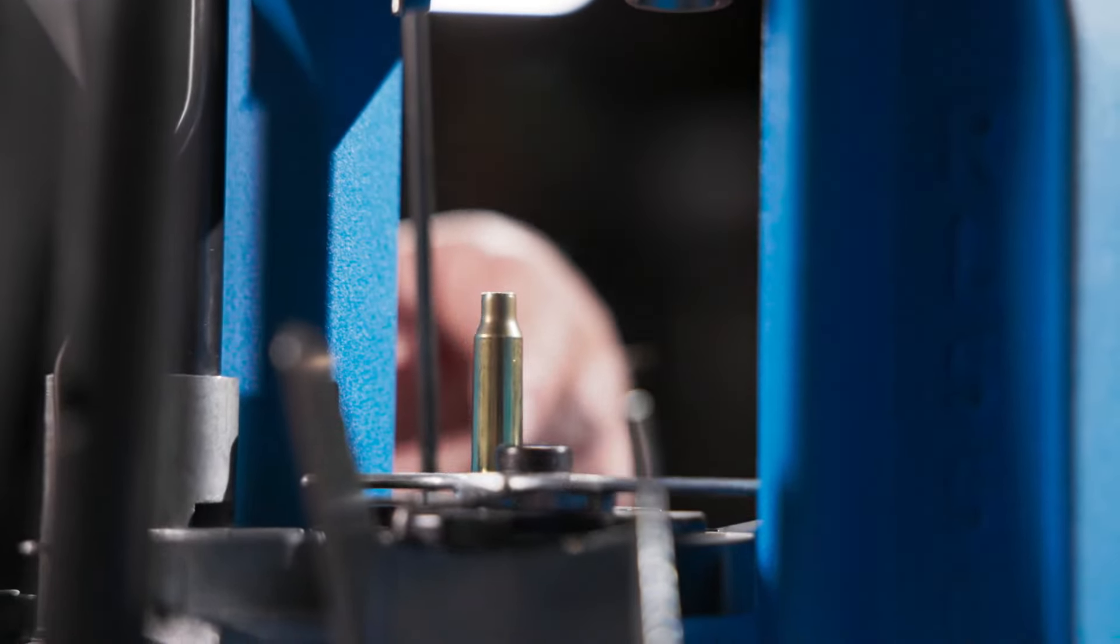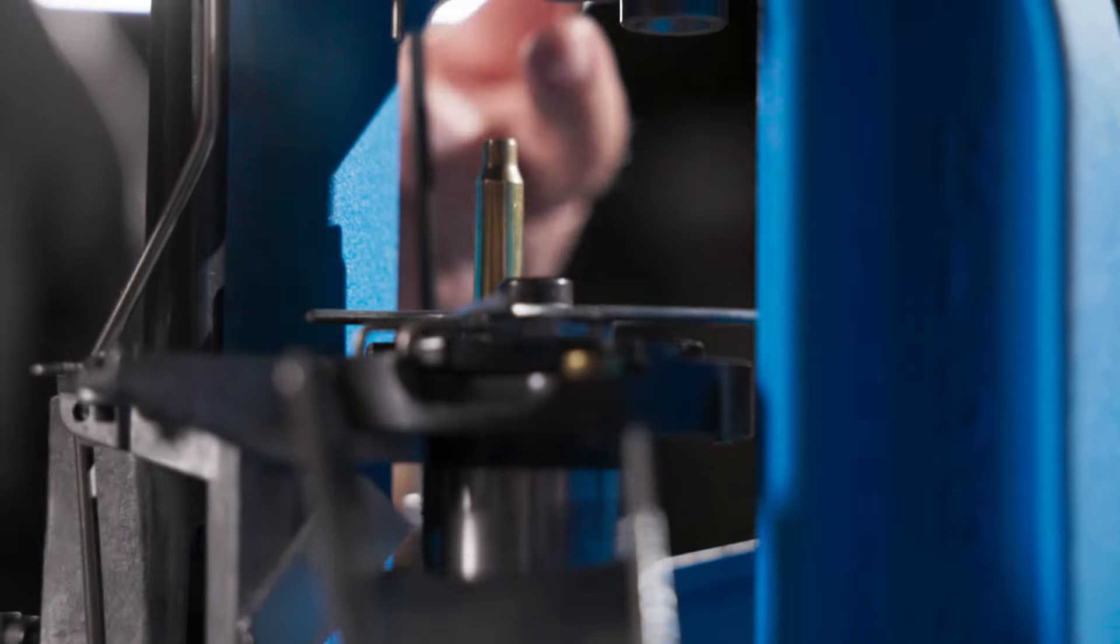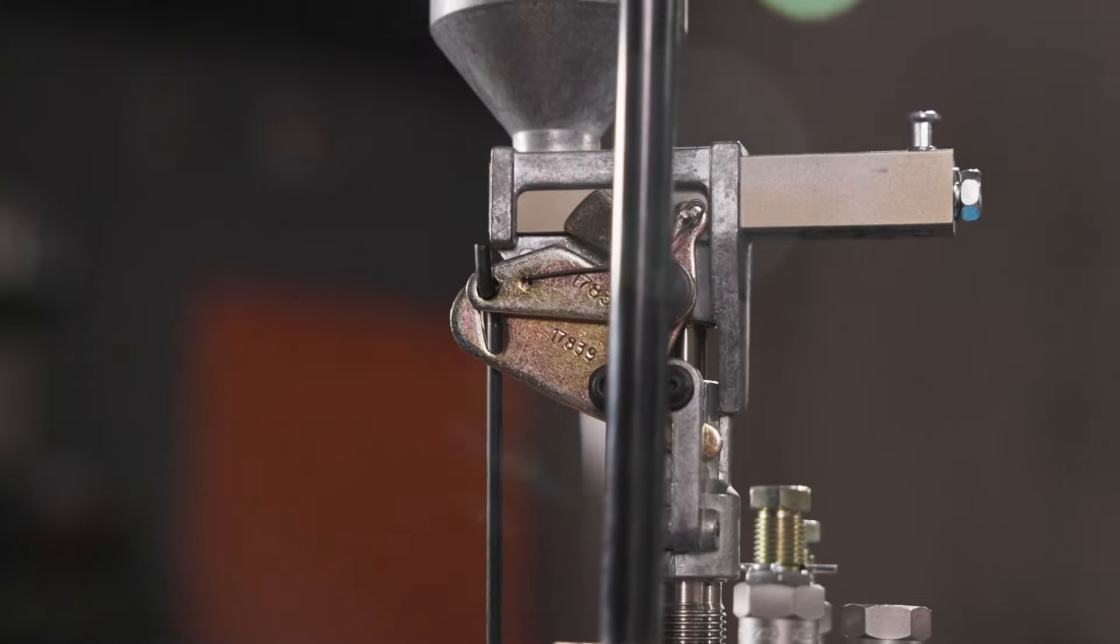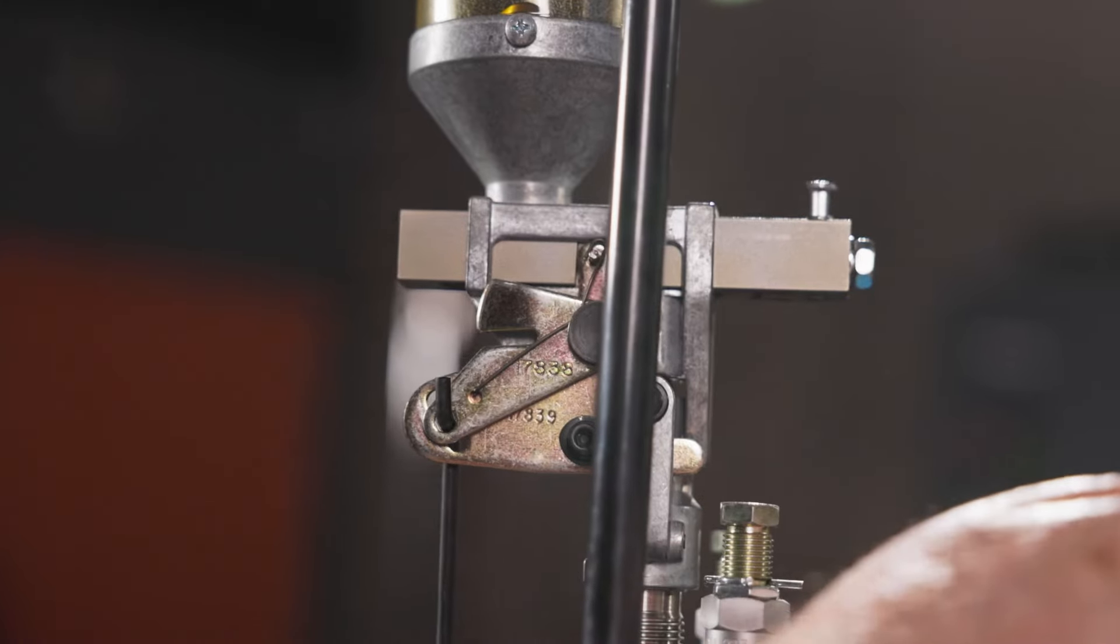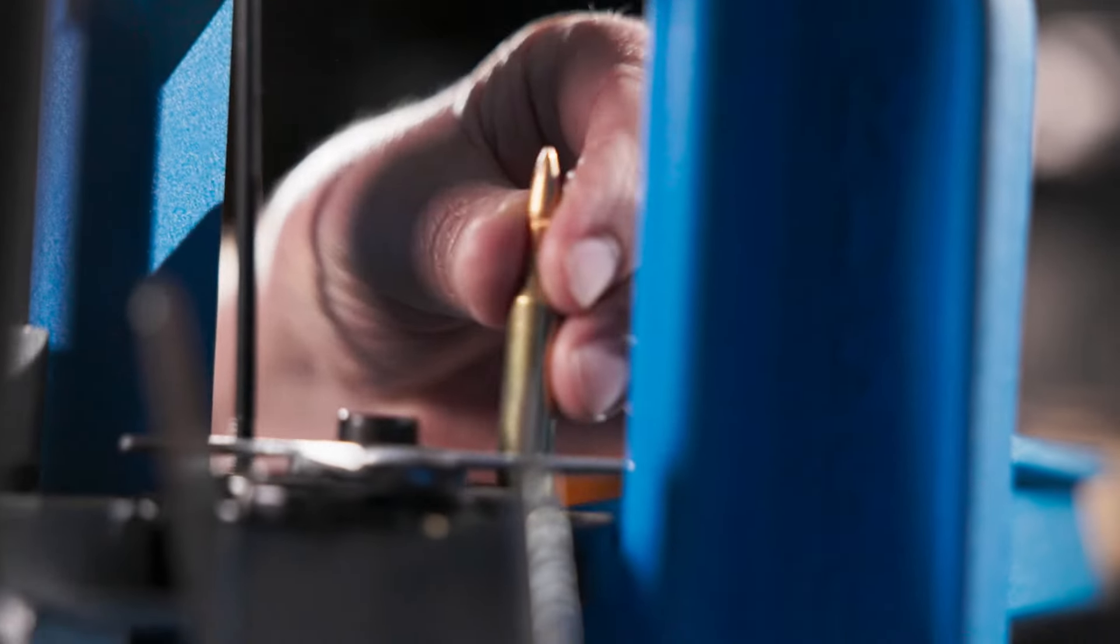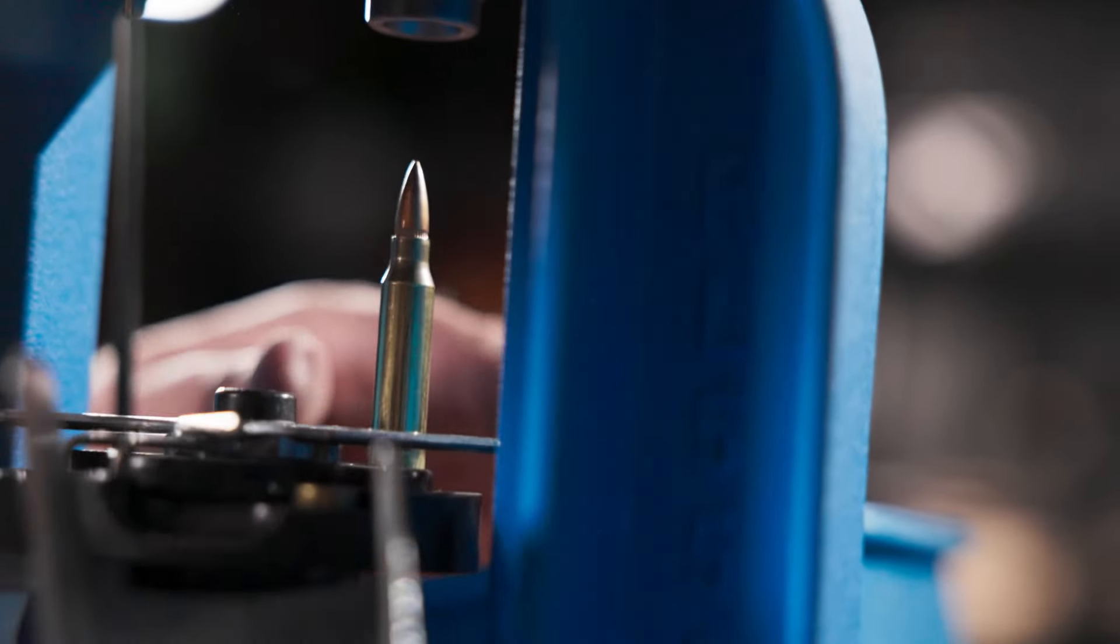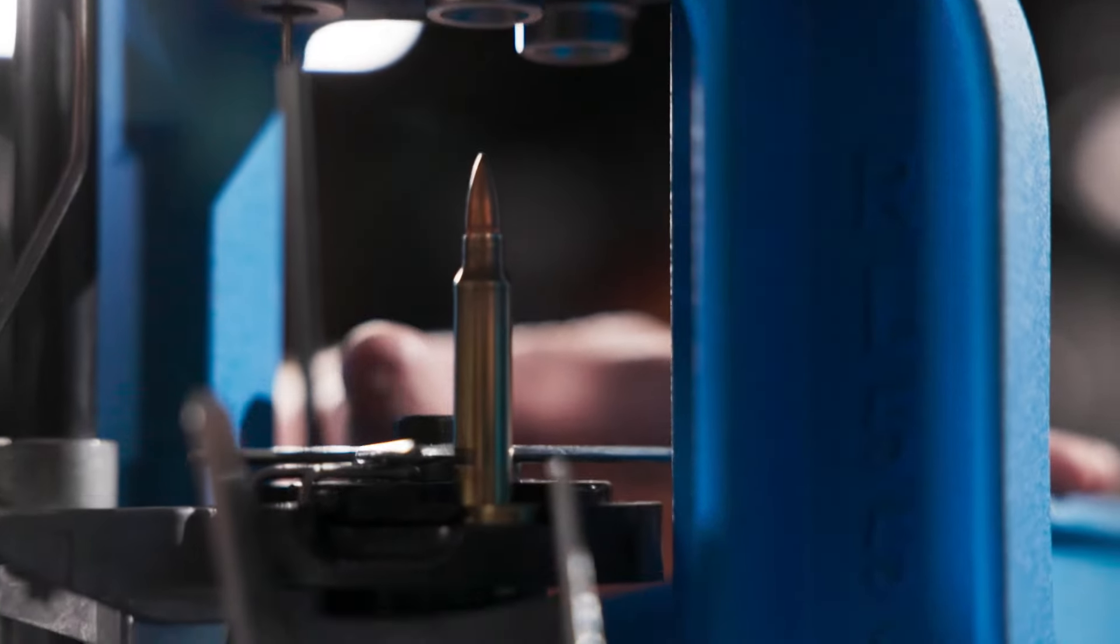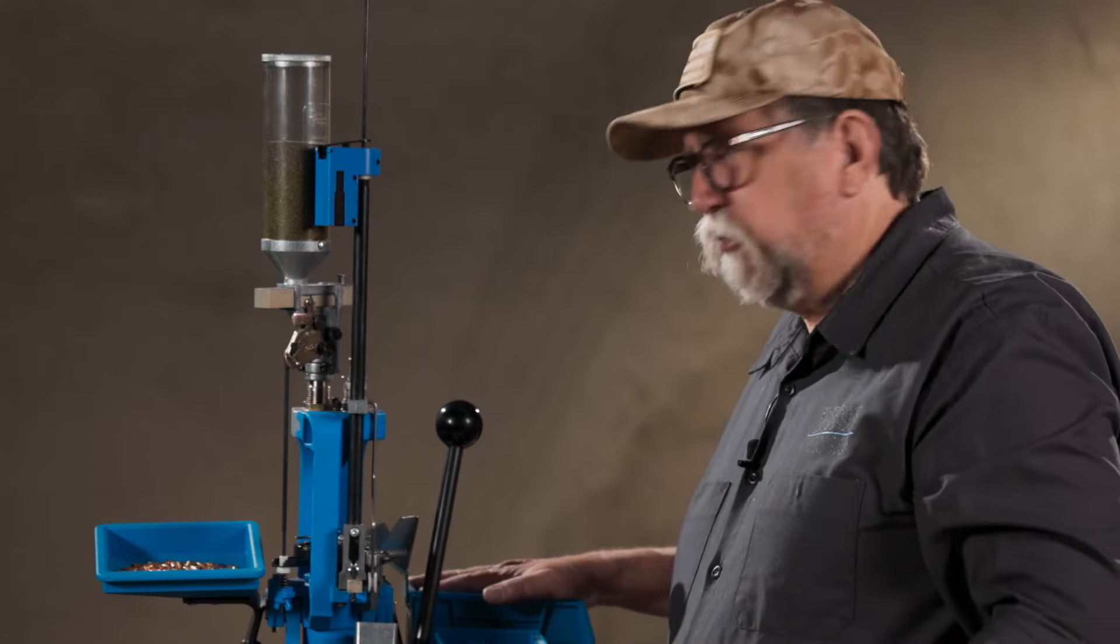Manually index it by pushing that sprocket clockwise 90 degrees. Next case pushes up and you'll watch the powder bar go over. That drops the powder charge through the funnel into the case. The fail-safe rod retracts it. Again, rotate it, set a bullet on the case mouth, seats it, index it, crimp, and then as I index it again, hits the ejector wire, goes down the chute into the catch bin.